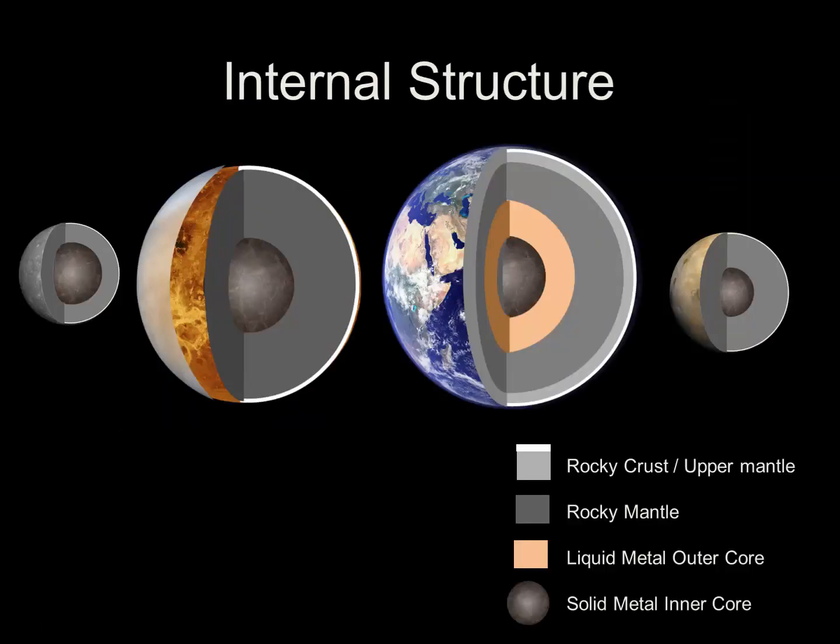Let's take a look at the internal structure of the four terrestrial planets. Starting with Mercury, you may notice that Mercury's core is much larger in comparison to the size of the rest of the planet. This larger metallic core is responsible for Mercury's much greater density. Comparing Venus and Earth, you'll notice right away that Earth has the liquid metal outer core. This gives rise to Earth's protective magnetic field. We also know a bit more about the internal structure of the Earth, and some of those layers give rise to our active plate tectonics.